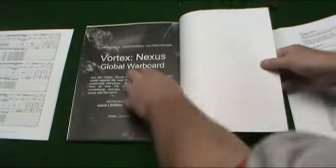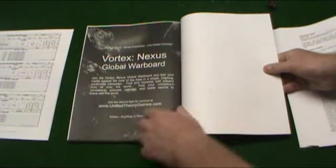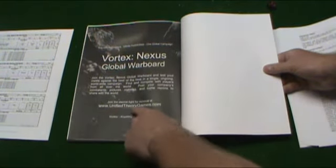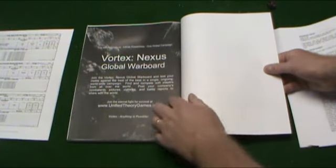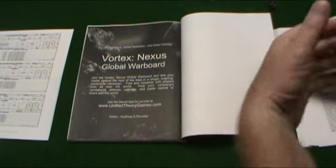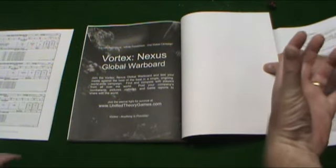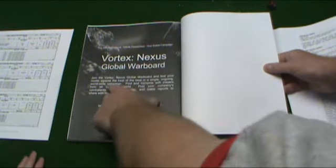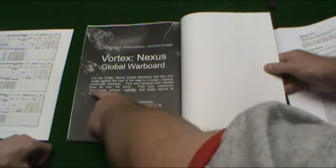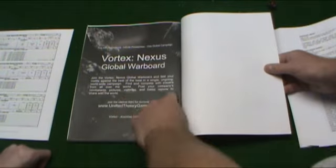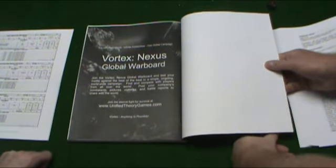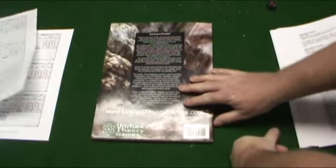But this book guys, yeah, this is where they're talking about the global war board, which is, yes, and it is www.unifiedtheorygames.com. But the global war board is what they were talking about, where you can basically test your mettle against the best single ongoing worldwide campaign, compete with players from all over the world, post your company's combatants, pictures, victories, battle reports, and share with the world. It's a very cool game.